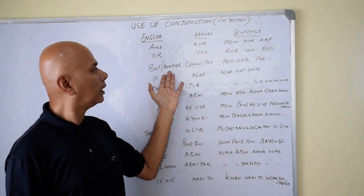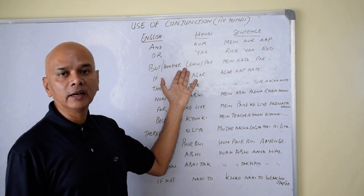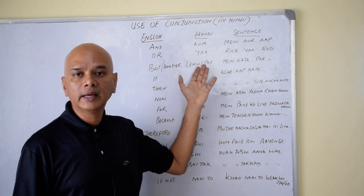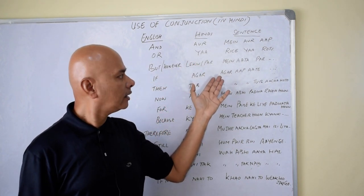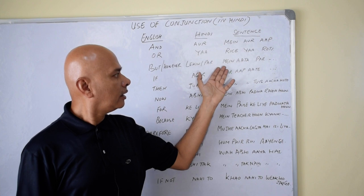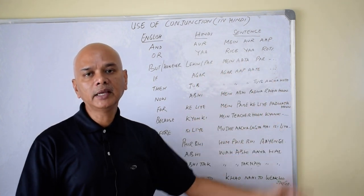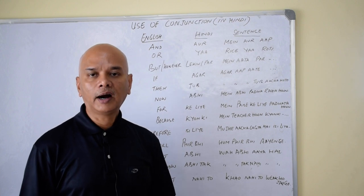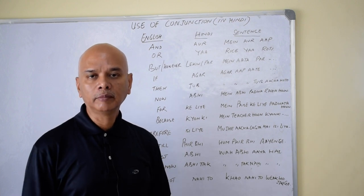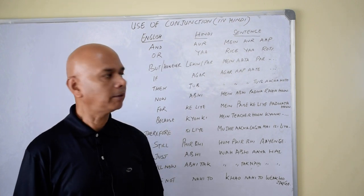'But' or 'however' is 'lekin' or 'par' in Hindi. For example: Main aata par time nahi tha — I would have come but I did not have time.